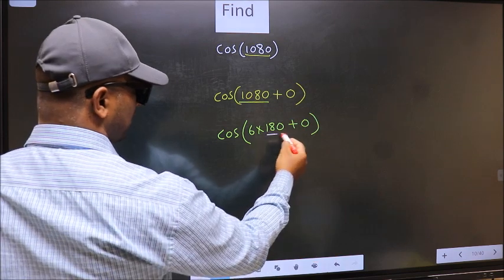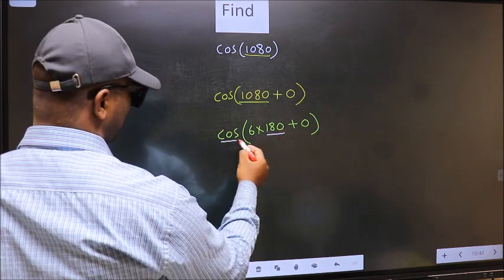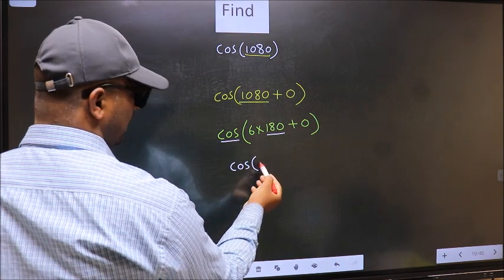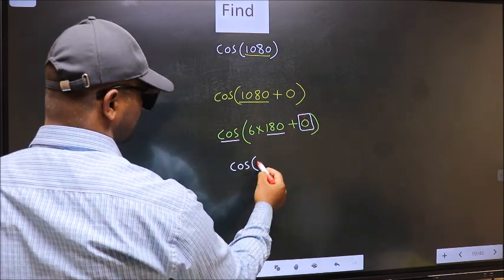Next, here we have 180. So cos is not going to change, it will remain cos. And inside, we get this angle, 0.